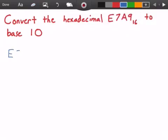So we have E7A9, that's our hexadecimal number. What we want to look at here is the index, the place that each digit is in. So we have 0, 1, 2, 3. Now what we're going to do is multiply the symbols E, 7, A, and 9 times 16 to the power of that index.